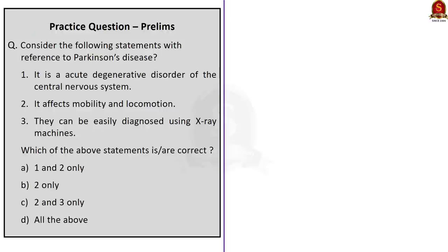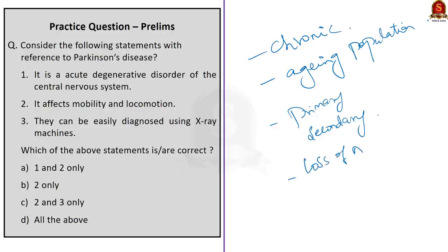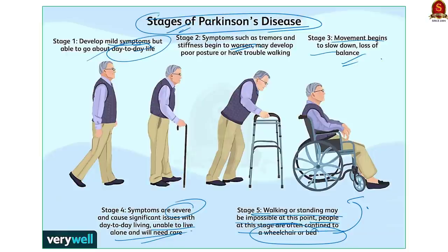So that's all regarding Parkinson's disease. We have seen that it is a common chronic degenerative disorder of the central nervous system, a disabling disease of the aging population that affects mobility and locomotion. We saw two types of Parkinsonian syndromes: primary or idiopathic type, and secondary or acquired type. This syndrome is caused by loss of nerve cells in the substantia nigra, and we concluded by discussing the five stages of Parkinson's disease.